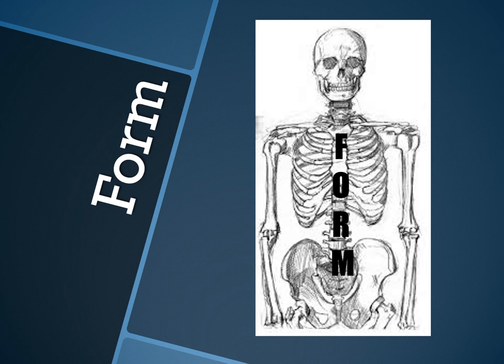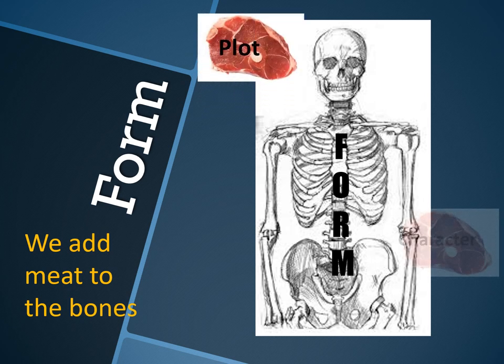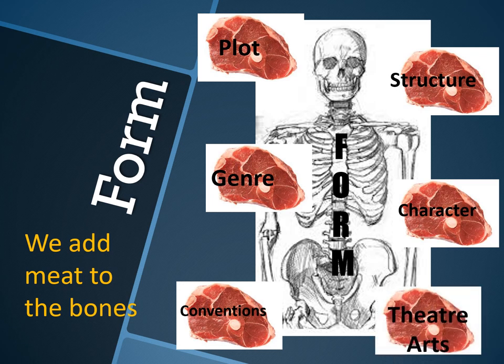The skeleton represents forms, and then we add meat to the bones. The elements we add to the skeleton include character, theater arts, plot, and characterization — all these elements are added to the skeleton to make a complete human body. The forms are the skeleton, and the structure — the meat — is what we add to build the whole body of the drama.